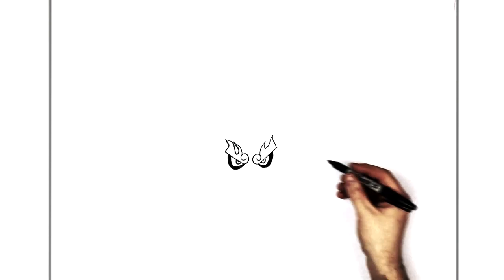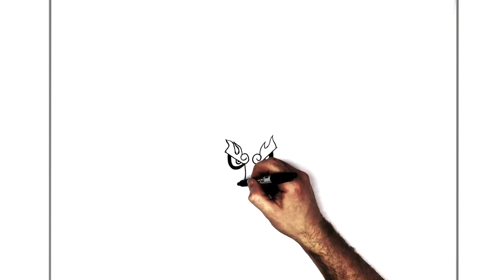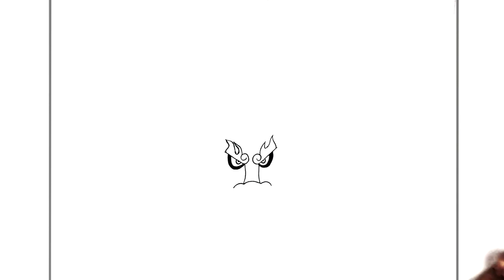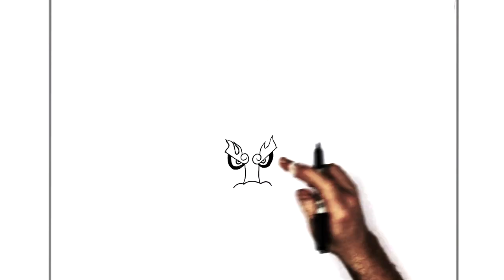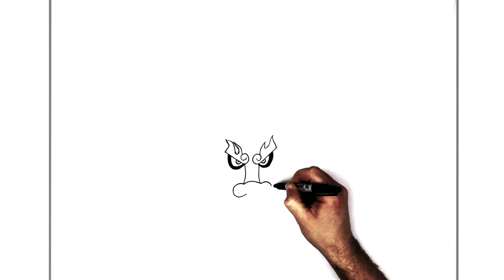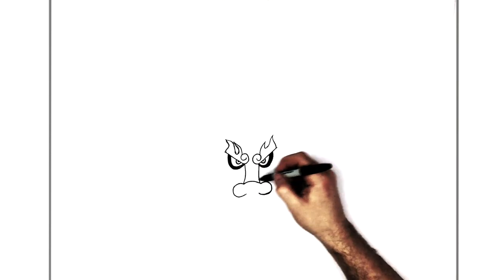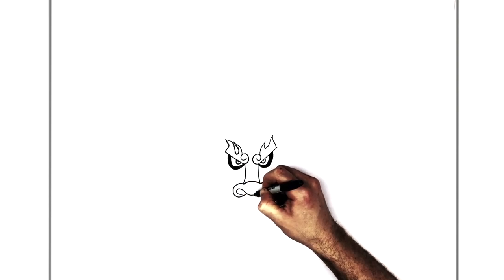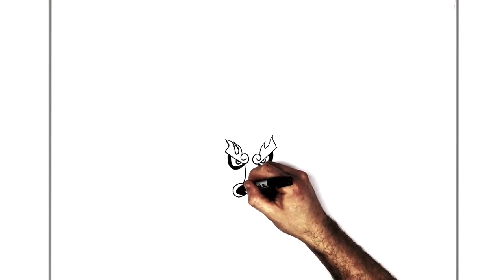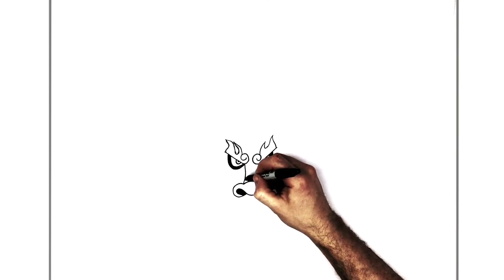His nose comes down like so to there, and then the nostrils — we've got a bump with a big bump in the middle: small, big, small. His nostrils will come around the bottom just to here. Inside the nostrils is dark. And then he has ridges coming over his nose.